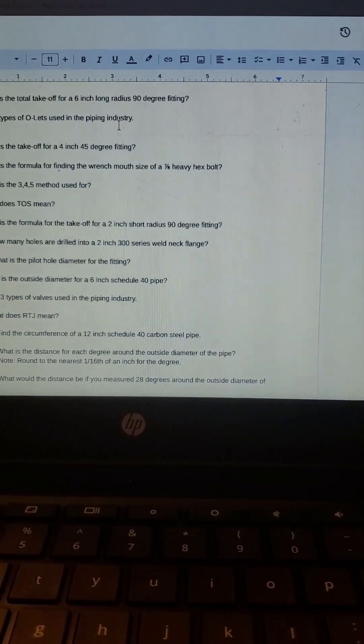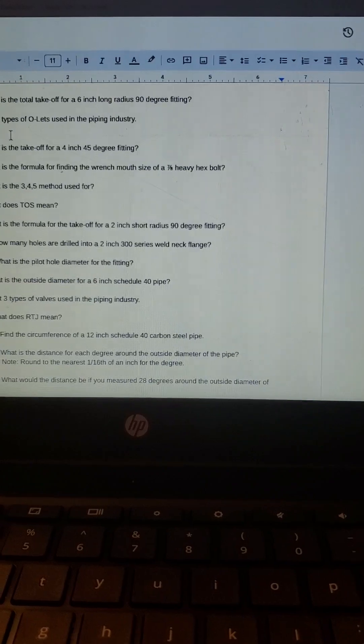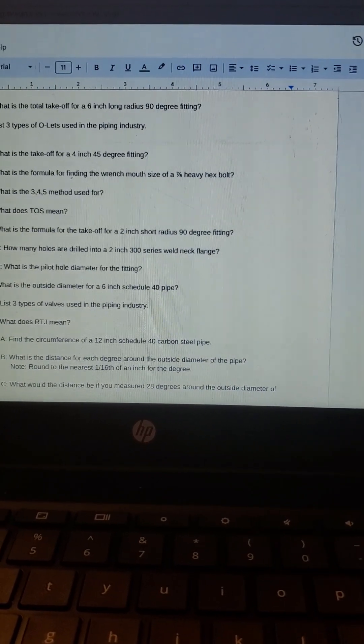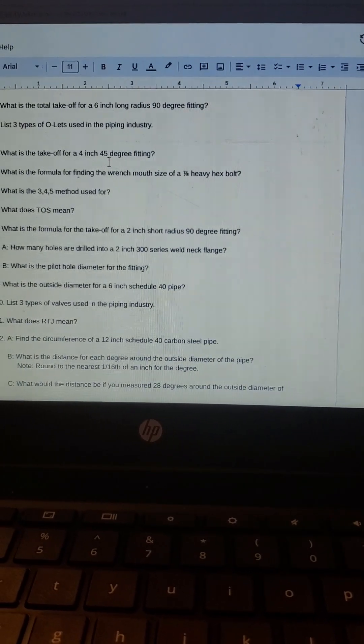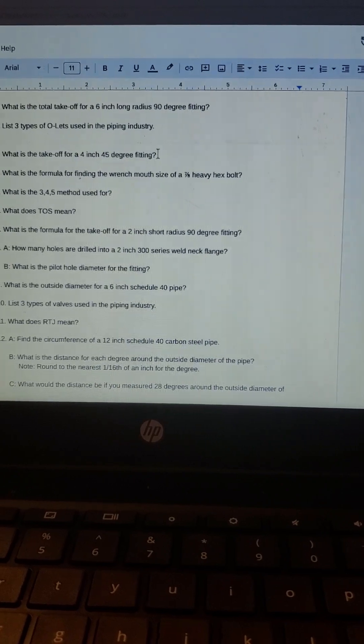Three types of olets used in the industry: weld olet, sock olet, and a thread olet. What is the takeoff for a four inch 45? That would be about two and a half inches.